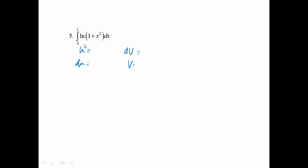For this one I'm going to pick u as my ln because we don't have an integral for it, so u = ln(1 + x²), and then the other part left would just be 1·dx. Since I'm looking for the derivative of ln, it would be du over u, so du = 2x/(1 + x²) dx. On the right side, the integral of 1 would be v = x.